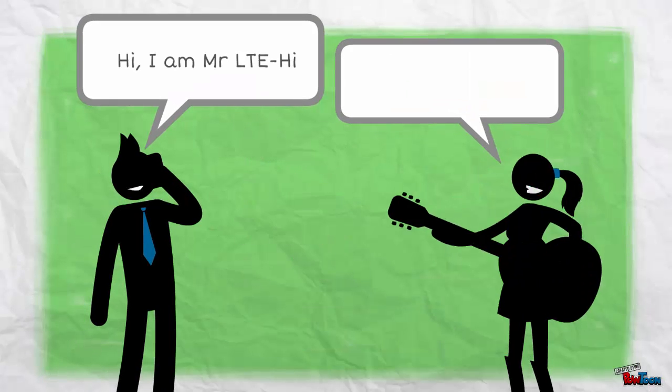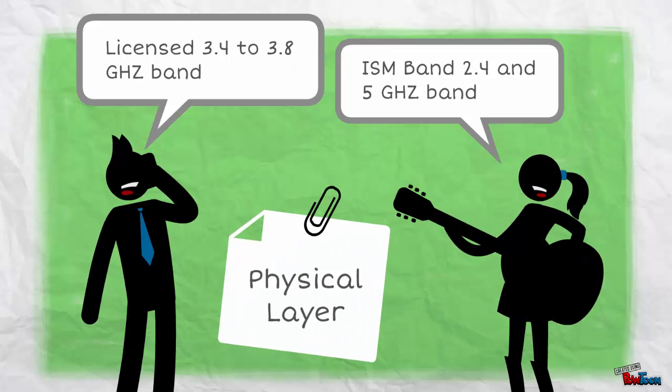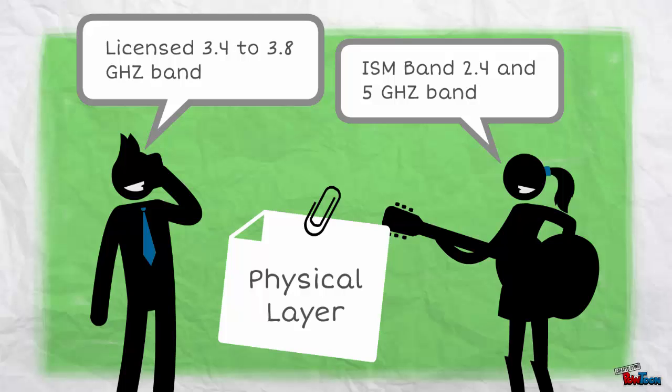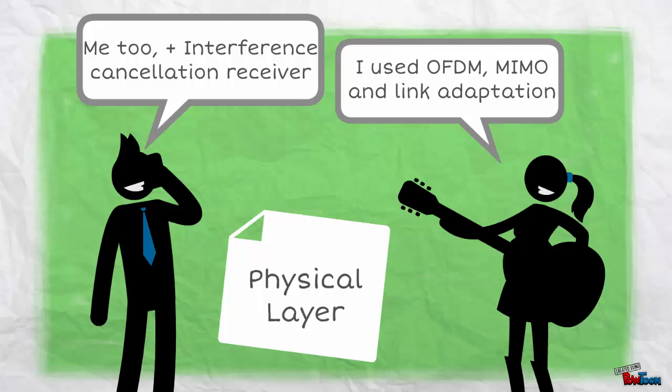First is the physical layer. LTE High uses bands ranging from 3.4 to 3.8 GHz while Wi-Fi uses 2.4 and 5 GHz. LTE High uses OFDM, MIMO and link adaptation like Wi-Fi and added an interference cancellation receiver.